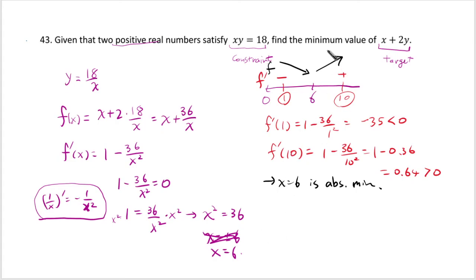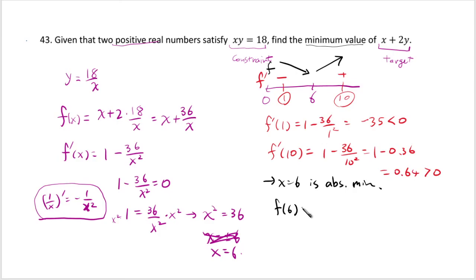Always read the question again. Sometimes they want the x and y values; sometimes they want the value of the function itself. In our case, it's asking for the value, so evaluate the function at x = 6: f(6) = 6 + 36/6 = 6 + 6 = 12. So the answer is 12.